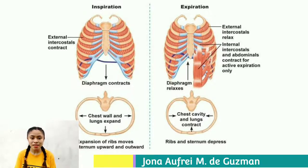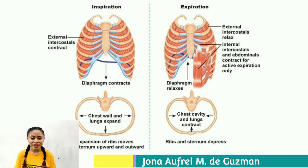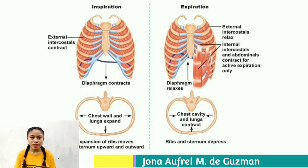Expiration occurs when the thoracic cavity volume decreases. During quiet expiration, the diaphragm and external intercostals relax, and elastic properties of the thorax and lungs cause them to recoil to a relaxed state. During labored breathing, there is a much greater increase in thoracic cavity volume; all inspiratory muscles are active and contract more forcefully. Additionally, the internal intercostals and abdominal muscles contract forcefully, decreasing thoracic cavity volume quickly and to a greater degree than during quiet breathing.